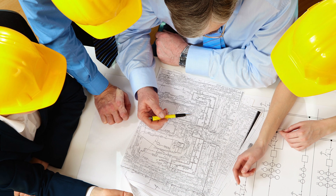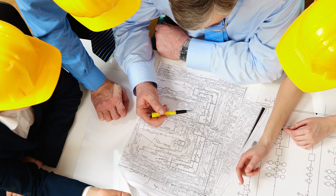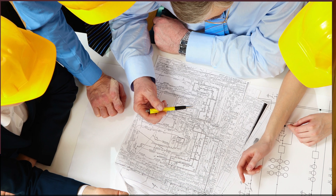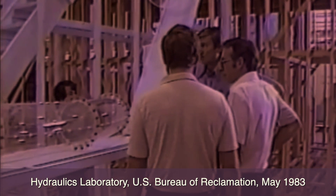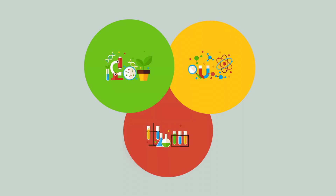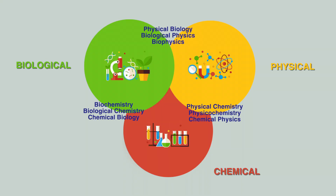Engineering involves the design of an artificial system, quite distinct from a natural system, to perform a function, task, or service to satisfy a perceived societal need. Engineering uses physical, chemical, and biological principles to design a certain system with the focus on performance.